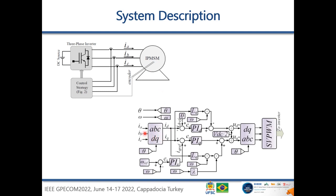The field-oriented control strategy is a classical one. The currents are measured and transformed into DQ references, then passed through PI current controllers. A speed controller is also included in the block diagram, and space vector modulation is used to drive the inverter transistors. The key question is how to design these three PI controllers. We propose a systematic procedure to design these parameters in a straightforward manner, with the speed controller designed using a frequency response approach.